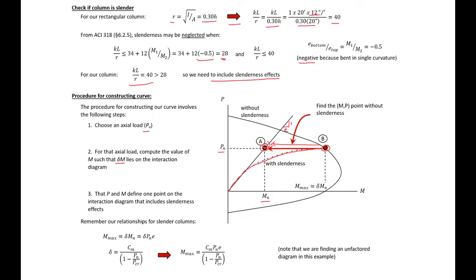We'll remember a couple of key relationships. Our magnified moment is just our moment magnifier δ times MN, and MN equals P times eccentricity. Our moment magnifier δ equals our Cm factor divided by (1 − PN/Pcritical). If using ACI with strength reduction factors, we include a 0.75 multiplier in front of Pcritical. Substituting in, we can relate our magnified moment to our axial load, and we'll use that moving forward.